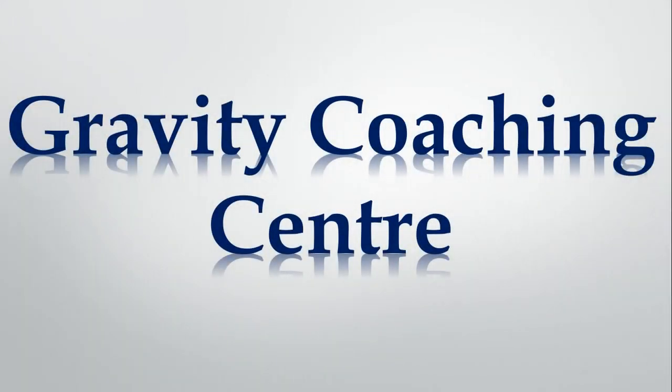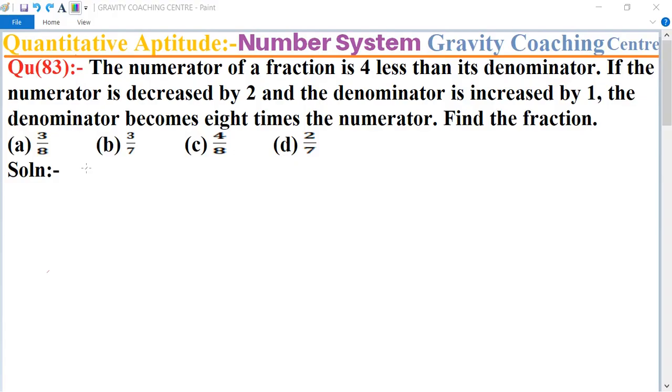Welcome to our channel, Gravity Coaching Center. Quantitative Aptitude, chapter Number System, question number 83. The numerator of a fraction is 4 less than its denominator. If the numerator is decreased by 2 and the denominator is increased by 1, the denominator becomes 8 times the numerator. Find the fraction.